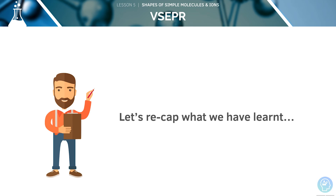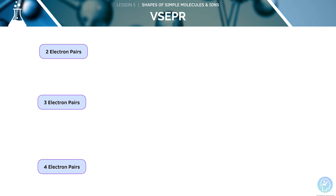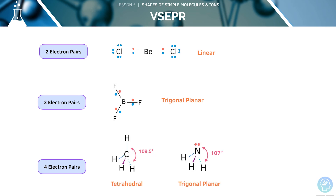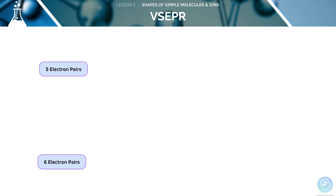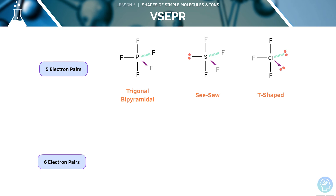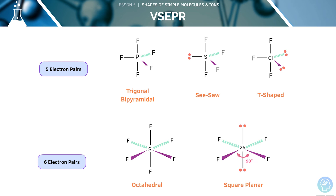Let's quickly recap what we've just learnt. When there are two electron pairs, the shape will be linear. When there are three, the shape will be trigonal planar. When there are four, the shapes will be tetrahedral, trigonal pyramidal, or non-linear. Now let's look at five electron pairs — the shapes here will be trigonal bipyramidal, seesaw, or T-shaped. With six electron pairs, the shapes will either be octahedral or square planar. These slides were a useful summary recap of all the shapes you'll need to know for your AQA exams, so pause the video now and go through them again slowly.